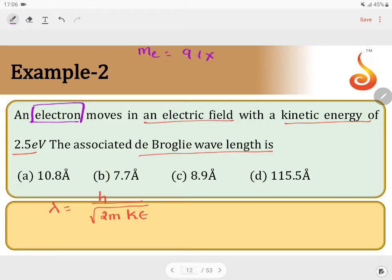9.1 into 10 power minus 31 kilograms. Similarly, if you consider kinetic energy, kinetic energy is 2.5 electron volts. This can be converted into joules: 2.5 into 1.6 into 10 power minus 19 joules because...